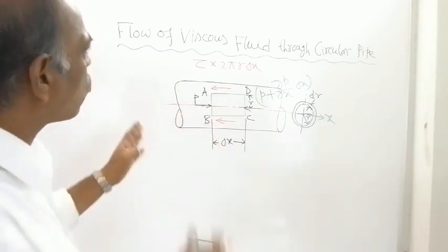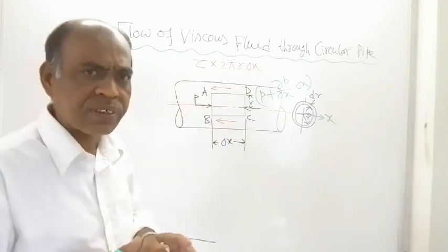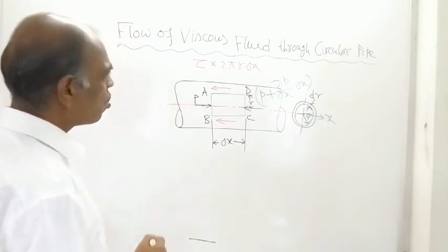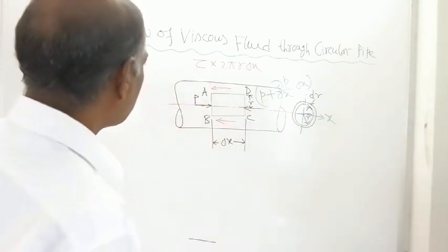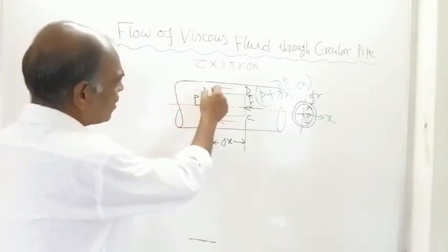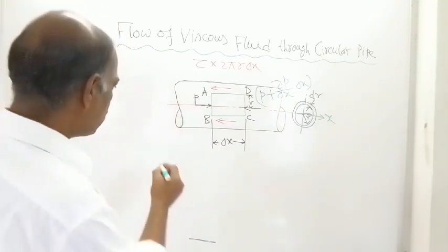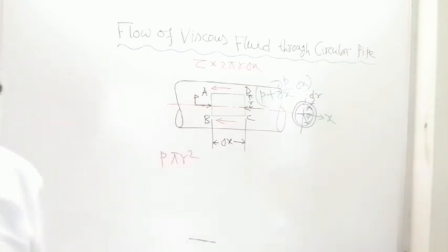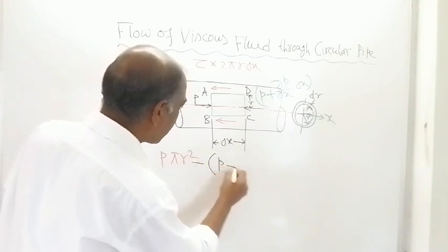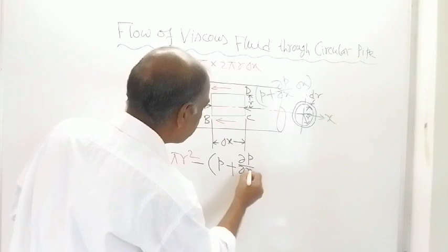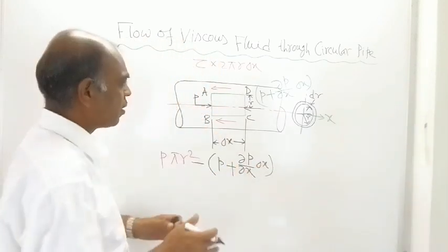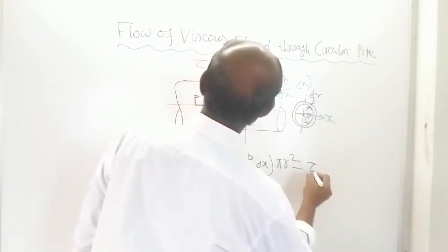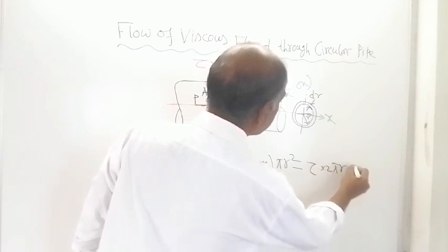We are talking about flow at constant velocity, so there is no acceleration. Therefore the resultant force on the fluid element must equal zero: P·πr² minus (P + ∂p/∂x·delta x)·πr² minus tau·2πr·delta x = 0.